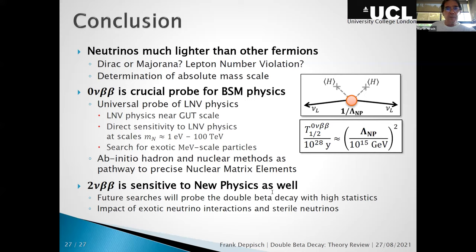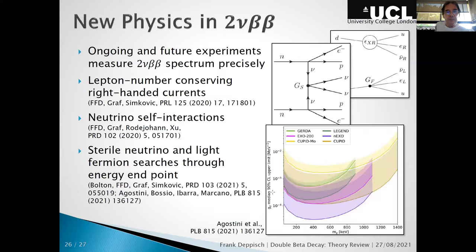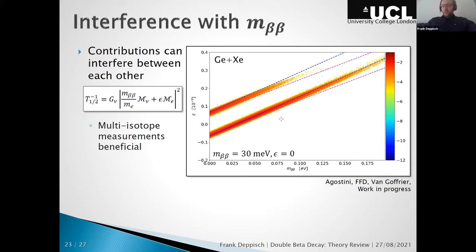One or two short questions: when disentangling two or more different contributions, does the analysis take into account nuclear matrix element uncertainties? That plot does not yet, but in principle of course it does — the uncertainties become larger. The ab initio methods promise better understanding of NMEs, so in the future there is hope for reduction of NME uncertainty. The principle applies, just with different error bands.